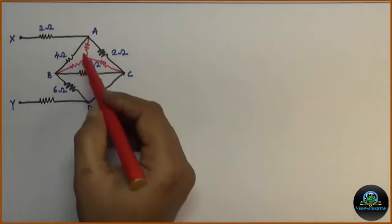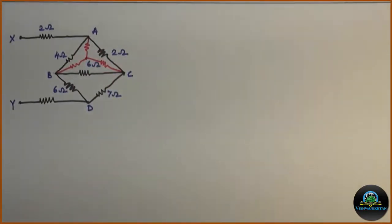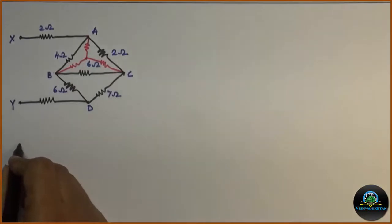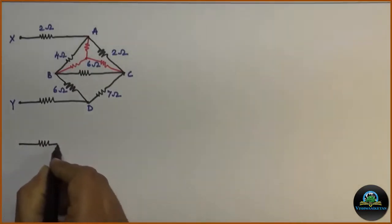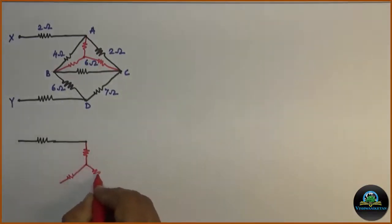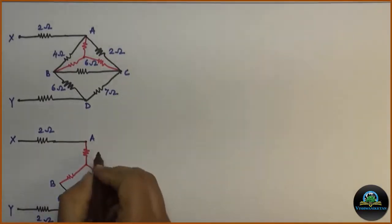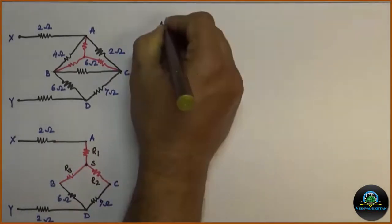So this is my star after conversion of delta. Now my circuit will be modified. So this is my star after conversion. Let us denote this star resistances R1, R2 and R3. Also,